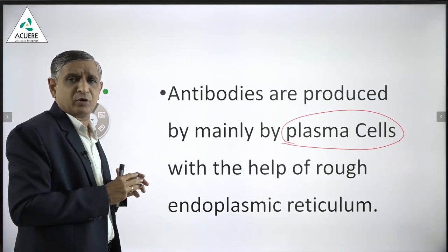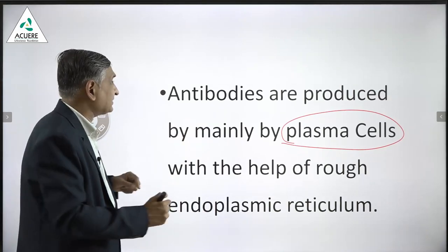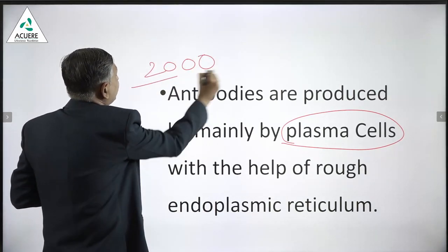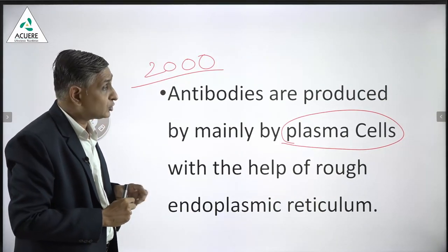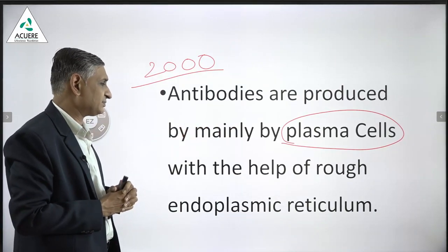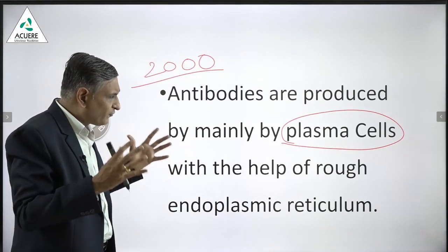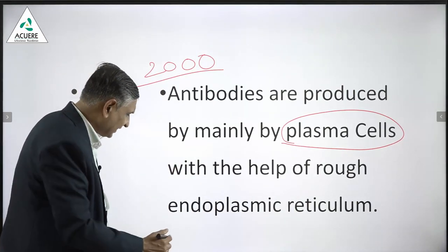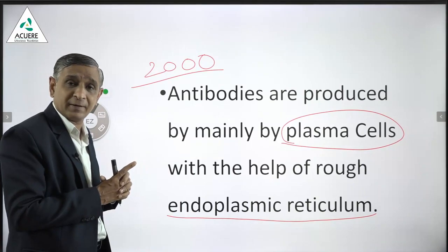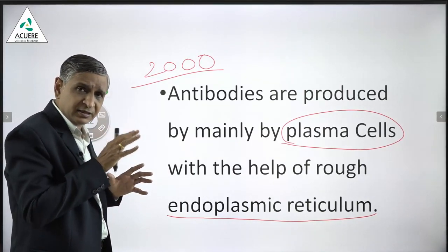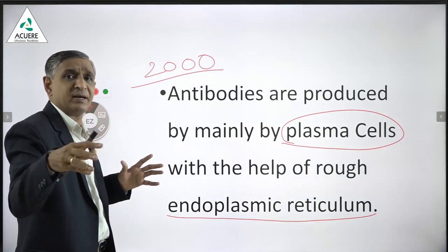The approximate rate of production by one plasma cell is about 2000 antibodies per minute. All antibodies are proteins, synthesized in the endoplasmic reticulum with the help of ribosomes, because every antibody is ultimately a protein.